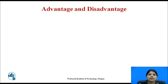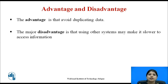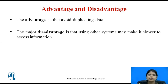Now we will see the advantages and disadvantages of the context model. The advantage of relying on other systems for patient information is that it avoids duplicating data. The major disadvantage is that using other systems may make it slower to access information, and the MHC-PMS cannot be used if these systems are unavailable.